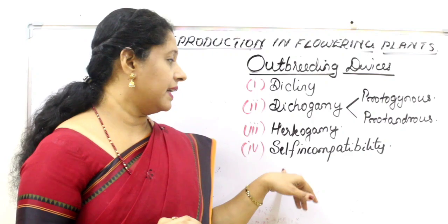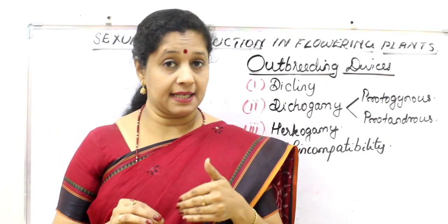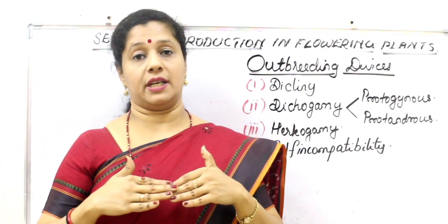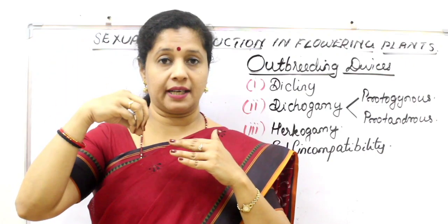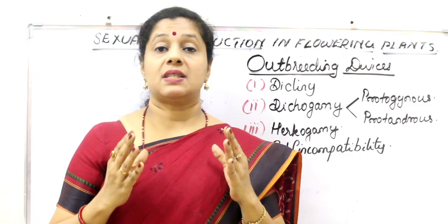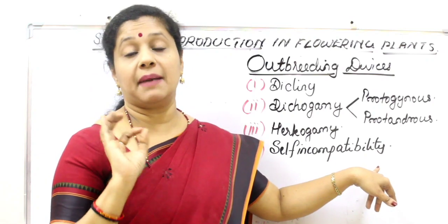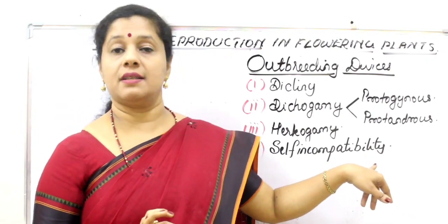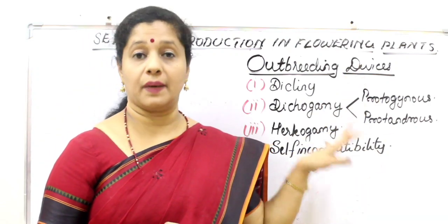The last outbreeding device is self-incompatibility — a genetic mechanism by which flowers discourage self-pollination. When the same flower's pollen falls on its own stigma, it will not be allowed to grow through the stigma. This genetic mechanism prevents self-pollen from germinating on the stigma. These are the different outbreeding devices — a very important question that requires at least three points.